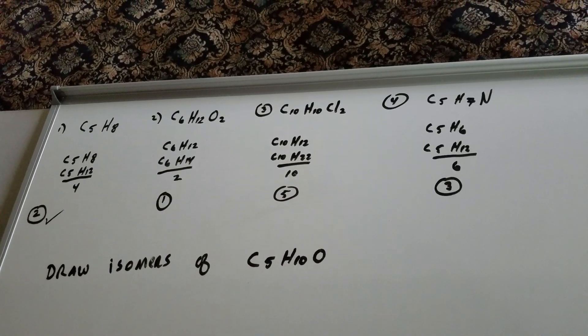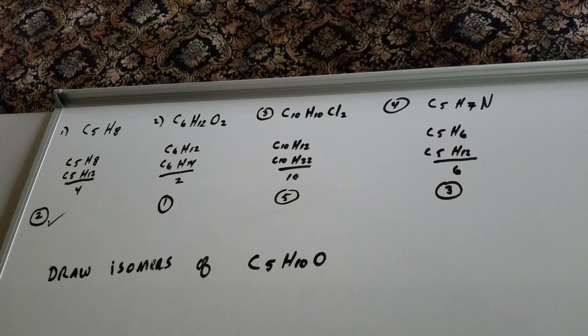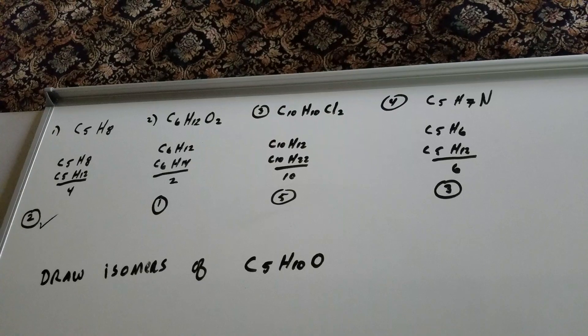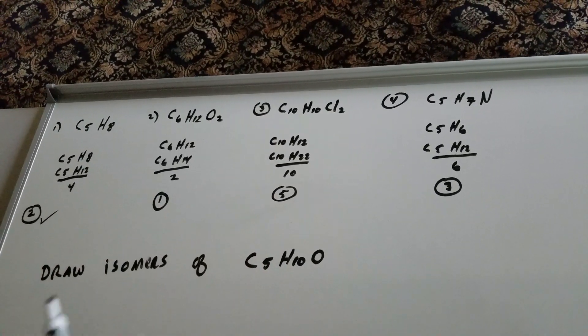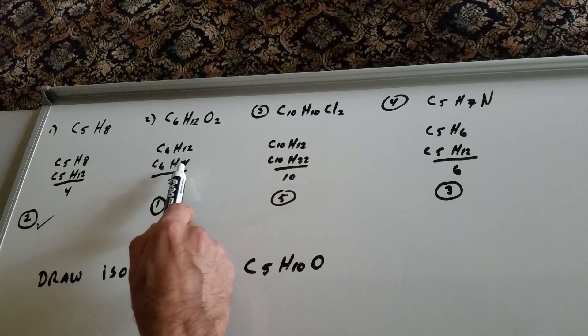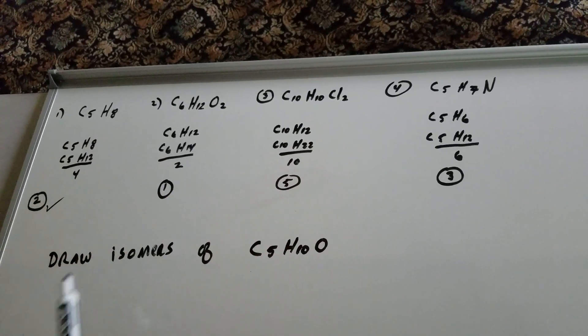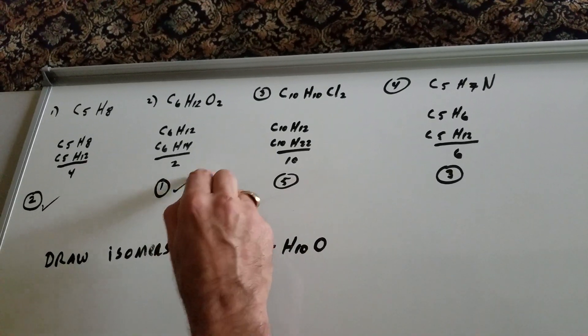Problem number two, if any compound contains an oxygen, the rule is ignore the oxygen. So you're going to look at C6H12O2 and just think of it as a C6H12. Underneath is the nearest alkane of C6H14. Remember, you double plus two, subtract the difference. 14 minus 12 is 2, cut it in half, and you get a 1.